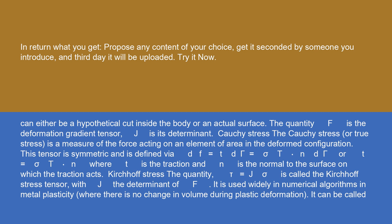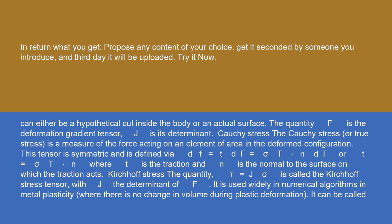Kirchhoff stress: the quantity tau equals J times sigma is called the Kirchhoff stress tensor, where J is the determinant of F. It is used widely in numerical algorithms in metal plasticity, where there is no change in volume during plastic deformation. It can also be called the weighted Cauchy stress tensor.